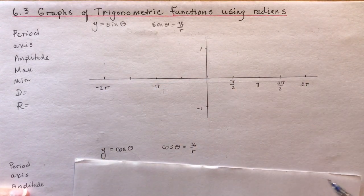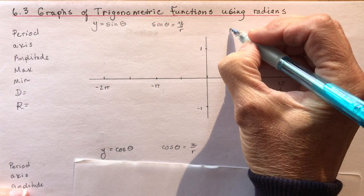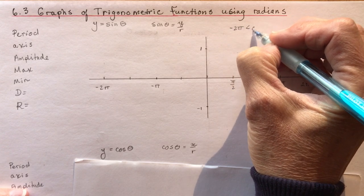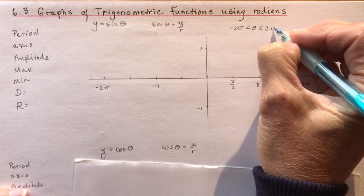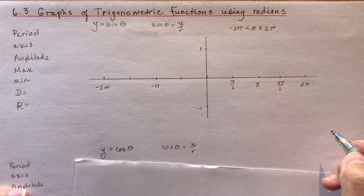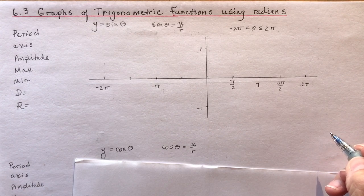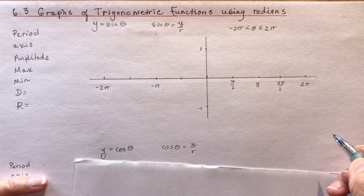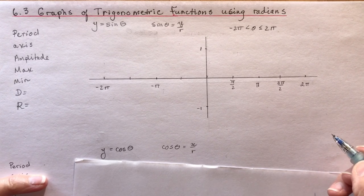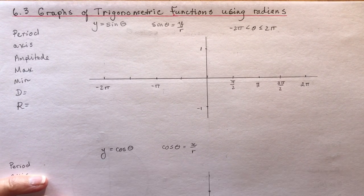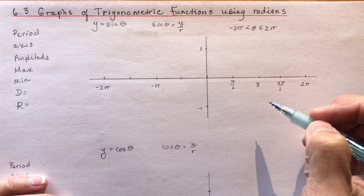So what I'm going to do is graph between for theta between minus 2 pi and 2 pi. Always check the domain that your teacher asked for because remember that a trigonometric function is never ending so you could do it for 100 pi if you wanted. That would be kind of silly though wouldn't it?